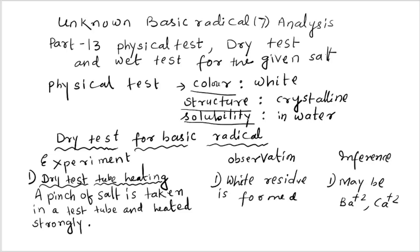After that we proceed to the dry test. First is dry test tube heating — a small amount of salt is taken in a test tube and heated strongly. When heated strongly, if you get an ammonia smell it may be ammonium, but since there is no ammonia smell, ammonium is absent. On the other hand, a white residue is formed, which may indicate Ba²⁺, Ca²⁺, or Sr²⁺.